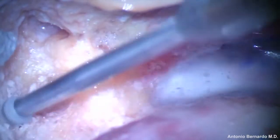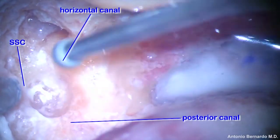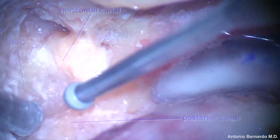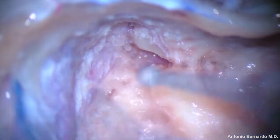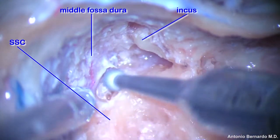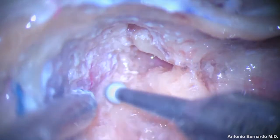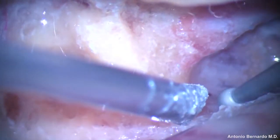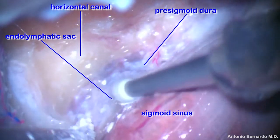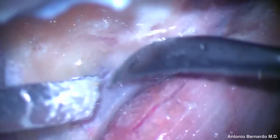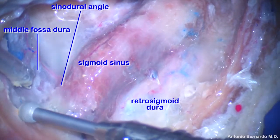The next step is removing the labyrinth. The horizontal canal is skeletonized together with the superior canal and the posterior canal. The dissection continues uniformly around the dural triangle. The middle fossa dura is further exposed and the labyrinthine block is completely isolated. The pre-sigmoid dura is completely uncovered and the endolymphatic sac is exposed between the posterior canal and sigmoid sinus. This would be the ideal exposure for a retro-labyrinthine approach, with the labyrinth still intact at the center of the drilling surface.